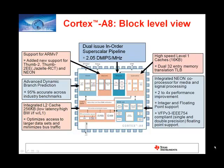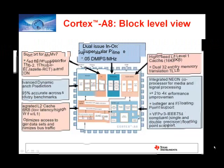It has two levels of cache. Level 1 consists of 16 kilobytes of instruction cache and 16 kilobytes of data cache, both of which are 4-way set associative caches. Level 2 has 256 kilobytes of unified cache, which is 8-way set associative.